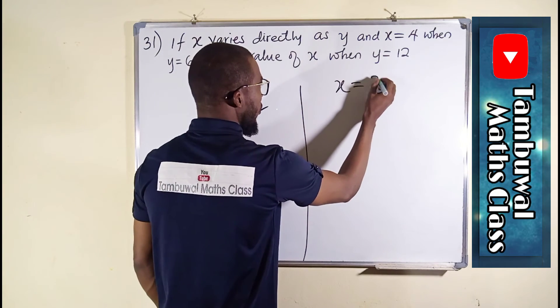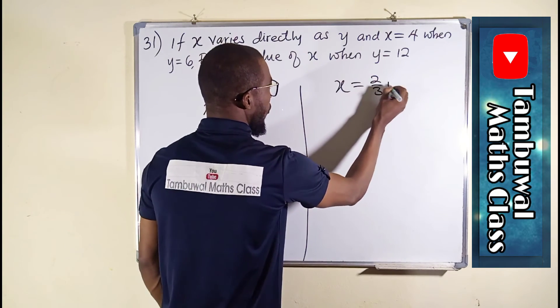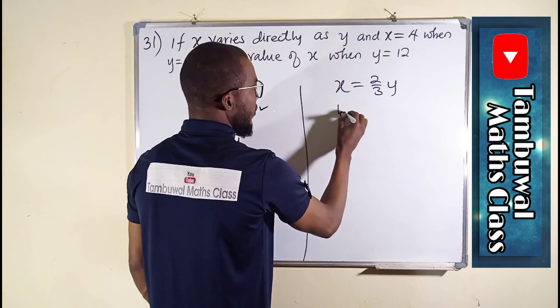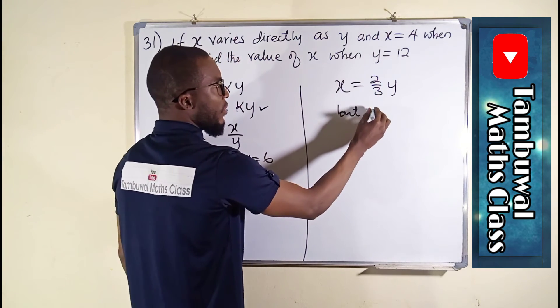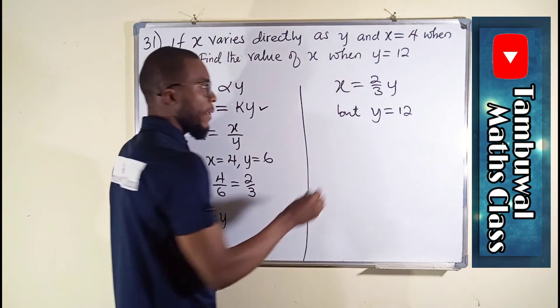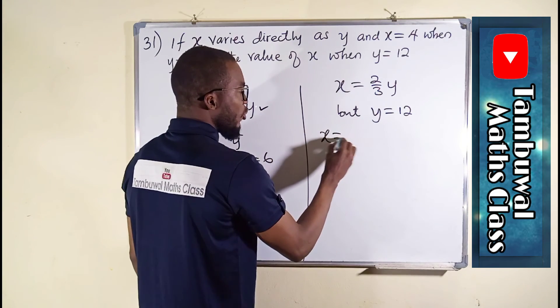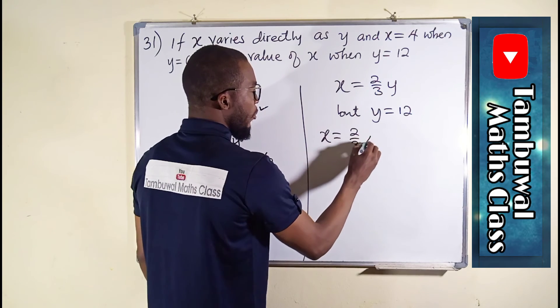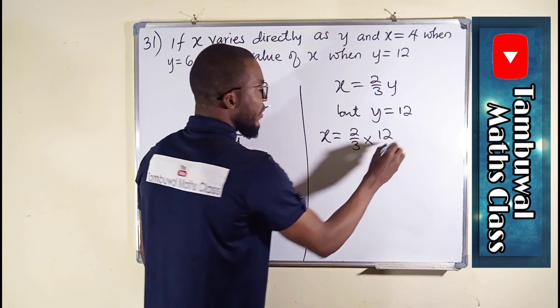We can see x equals 2 over 3 times y, but y equals 12, so we are going to substitute it. x will now be equal to 2 over 3 multiplied by 12.